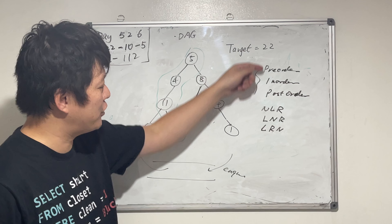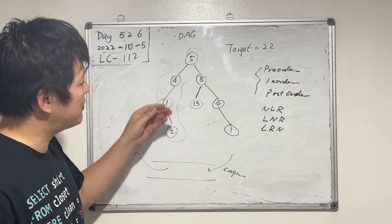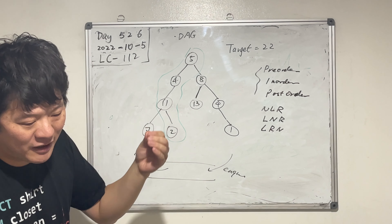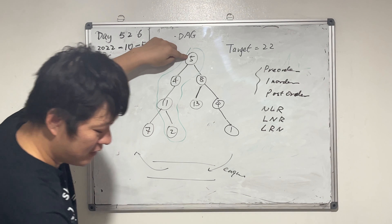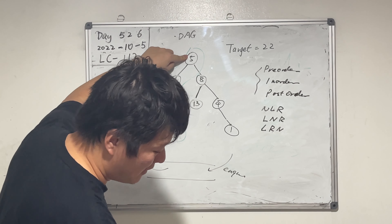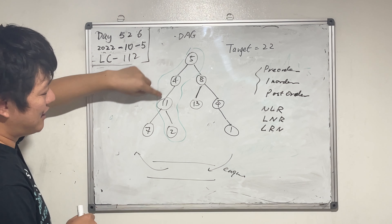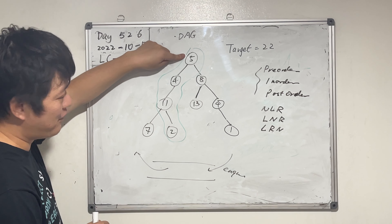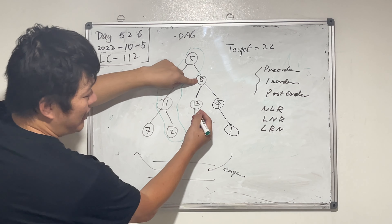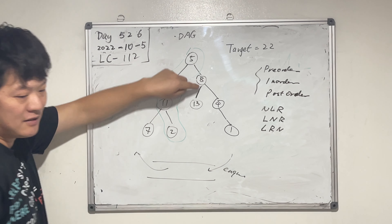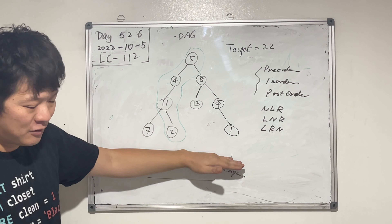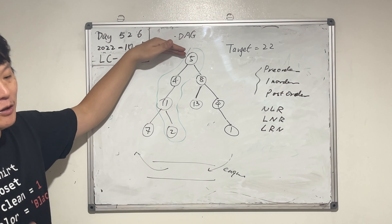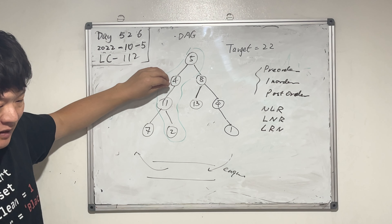It doesn't matter which order — as long as we carry out the sum. When we do depth-first search recursion, we can store the current total sum from the root. Current sum is 5, then 9, then 20, then 27, then 22. Or current sum is 5, 13, 26, 17, 18. We pass the current sum to the leaf nodes as we travel, accumulating from the root to the current node.